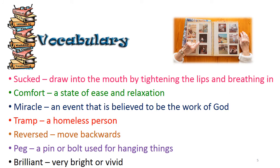Now let's look at the vocabulary from the poem. 'Sucked' means to draw into the mouth by tightening the lips and breathing in. 'Comfort' means a state of ease and relaxation. A 'miracle' is an event believed to be the work of God. A 'tramp' is a homeless person. 'Reversed' means to move backwards. 'Pig' here refers to a peg or bolt used for hanging things. 'Brilliant' means very bright or vivid.